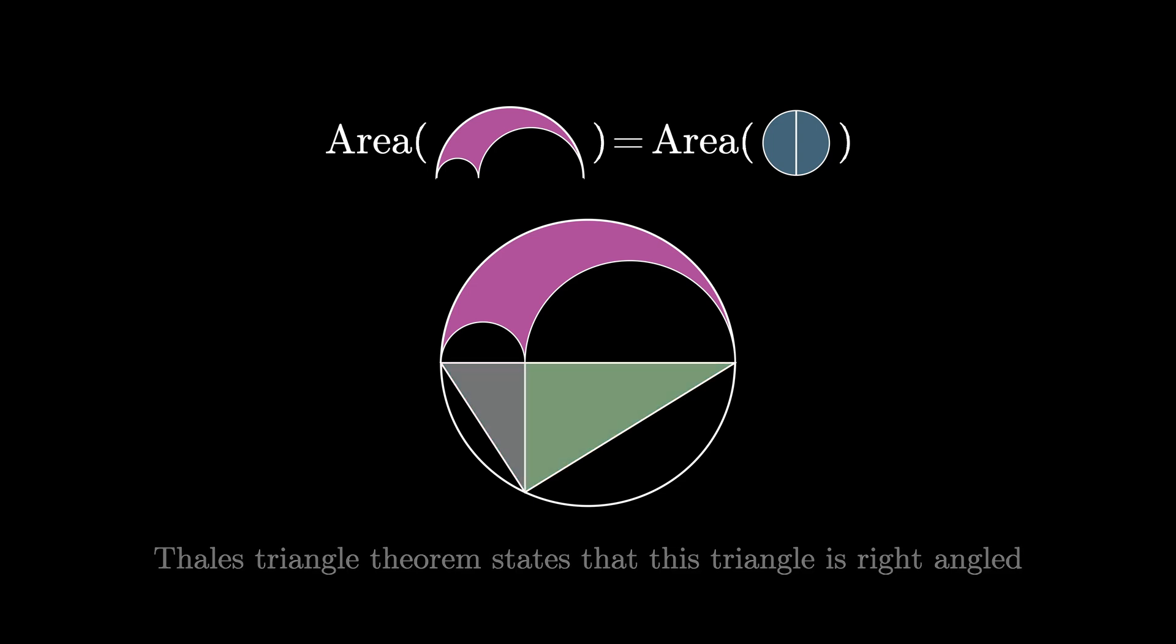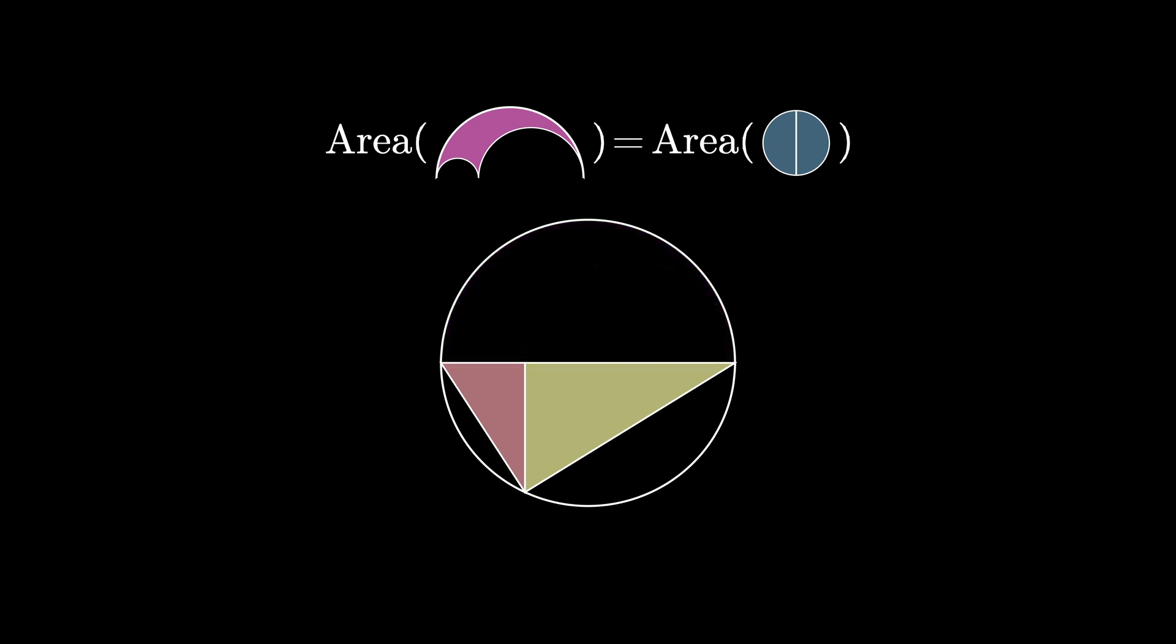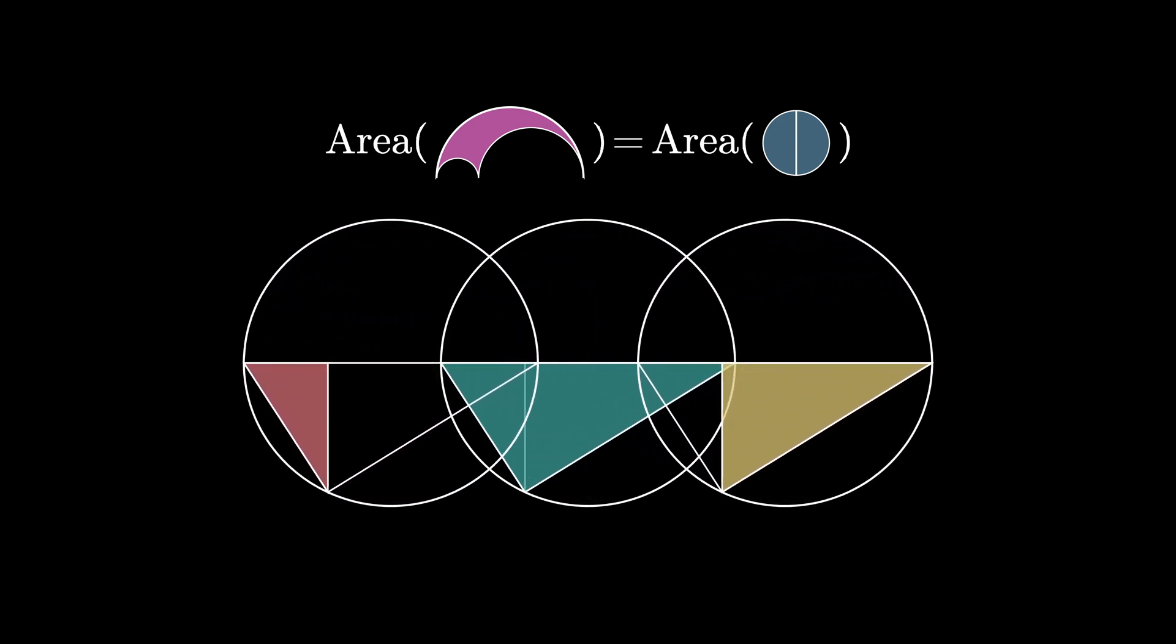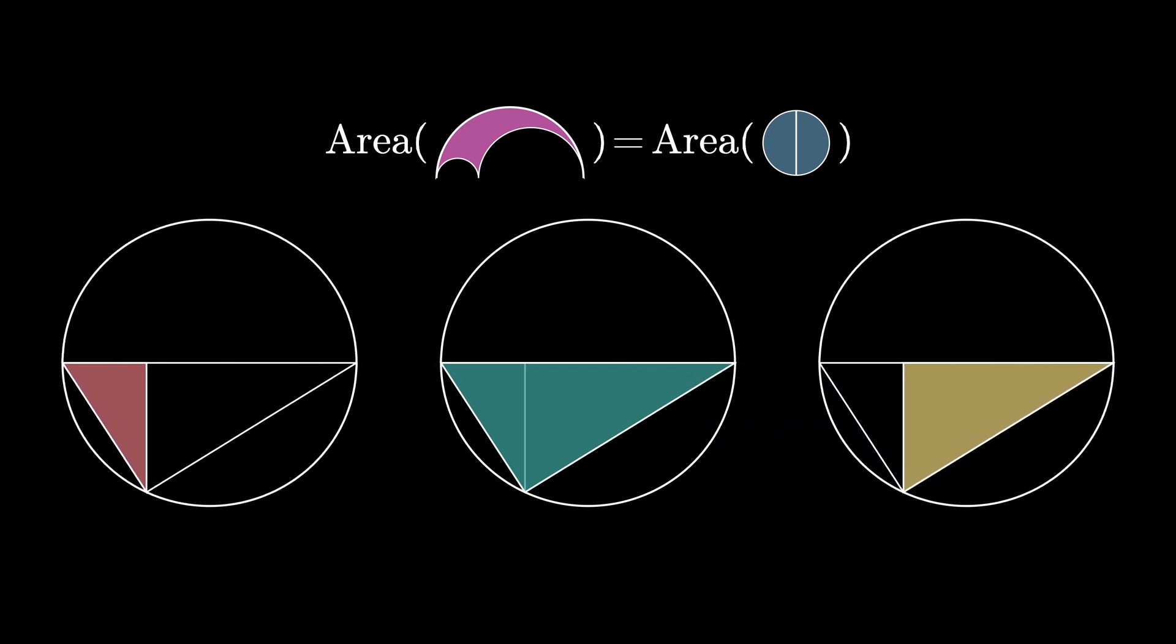Next we can decompose this right triangle into these two smaller right triangles and split the diagram into three separate pieces one for each of the right triangles.